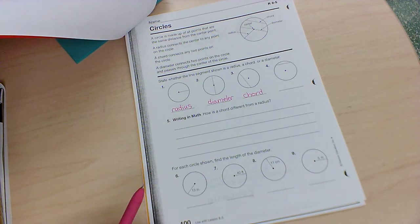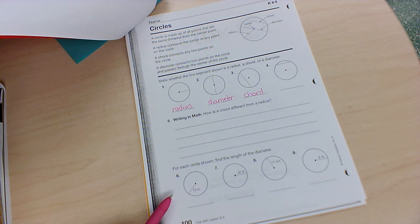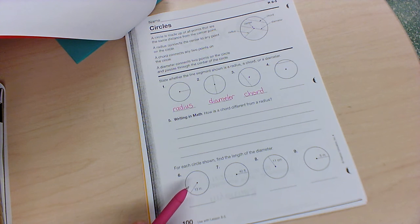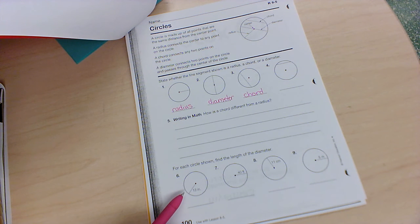And the links down below, numbers six, seven, eight, nine, it says for each circle shown, find the length of the diameter. Well it does not tell us the diameter but we have the radius. So a radius is half of a diameter, so we need to do...